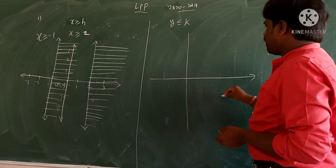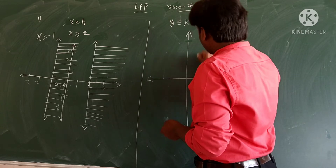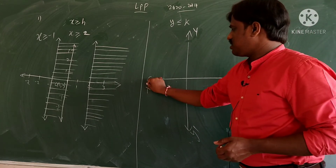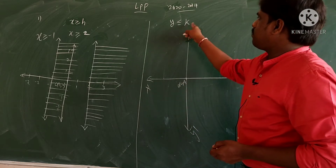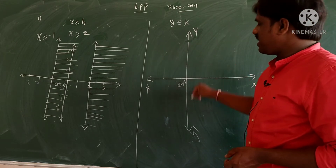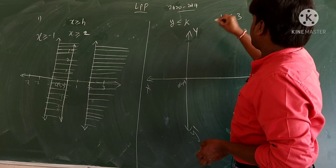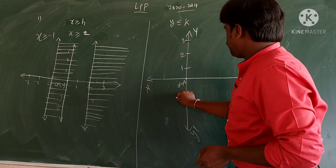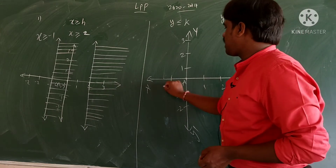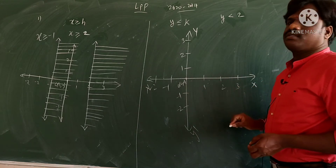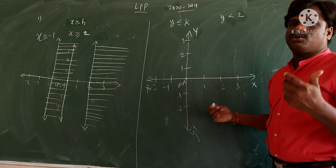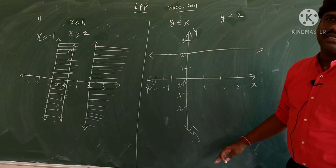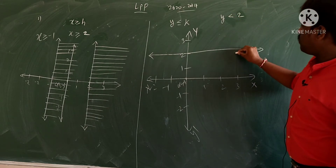For y-axis related inequalities, remember: this is the x-axis (x-x dash), vertical line is y (y-y dash), and this is the origin O (0,0). If somebody says y less than 2, mark the y-axis: 1, 2, 3 - remember to write the scale, for example x-axis one centimeter equals one unit. At y = 2, draw a horizontal line. Less than 2 means downside; greater than 2 means upwards. If there's no equal to symbol, give a little gap before shading.